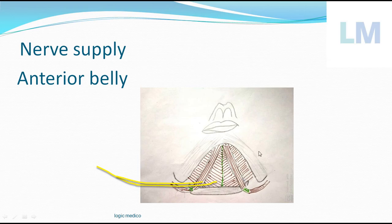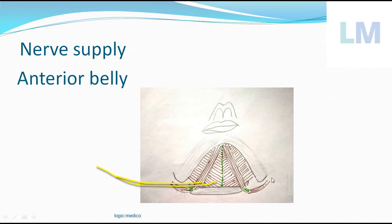Such a muscle with dual nerve supply is called a hybrid muscle or composite muscle — just like a hybrid car that runs on both petrol and electricity. Embryologically, this muscle is derived from two different arches. The anterior belly is derived from the mandibular arch, whose nerve is the trigeminal nerve (mandibular division). The posterior belly is derived from the hyoid arch, or second branchial arch, whose nerve is the facial nerve. Therefore, this muscle is a hybrid muscle with dual nerve supply.